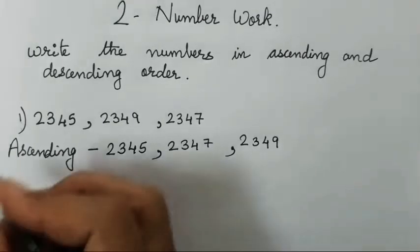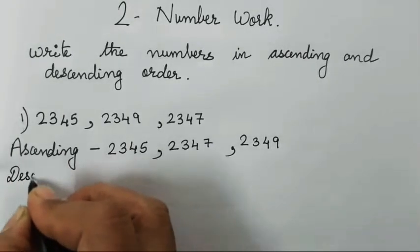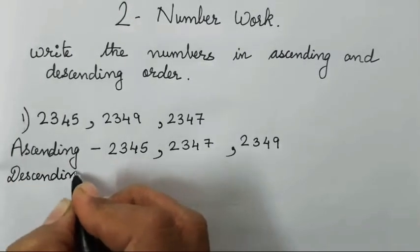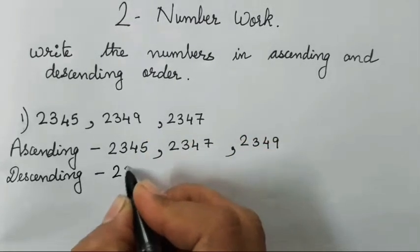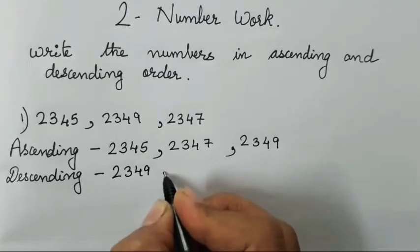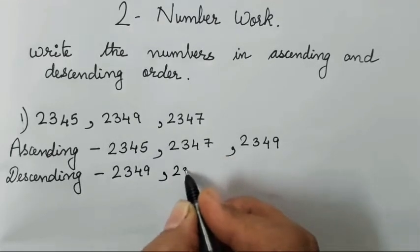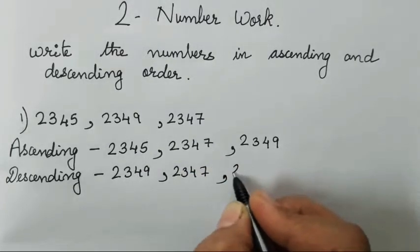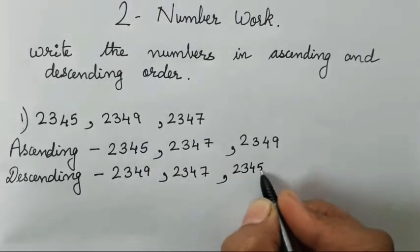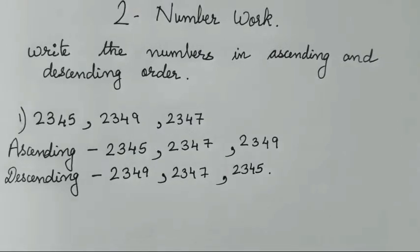Now how you are going to write descending? Descending is very easy children. It's the reverse. So first you have to write this, that is 2349, then this number 2347, and at the end this number 2345. Isn't it easy?